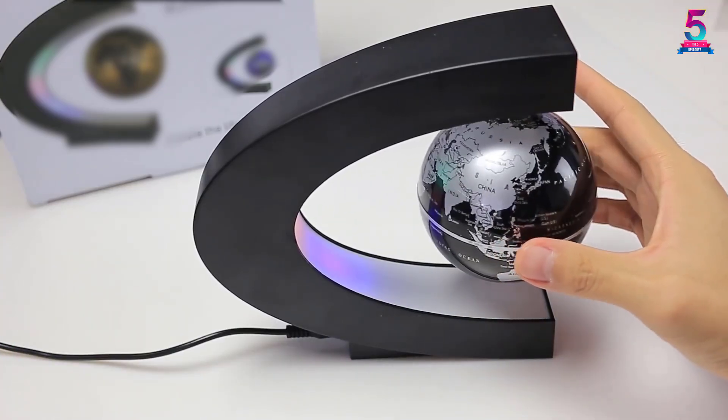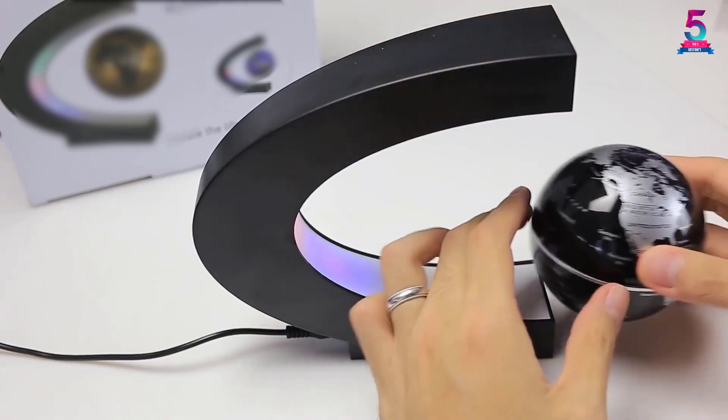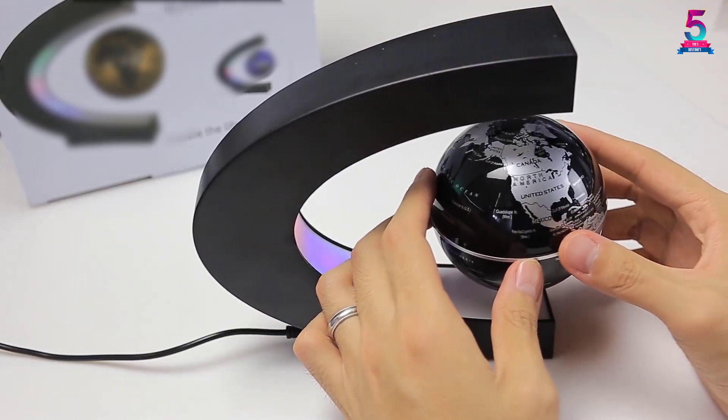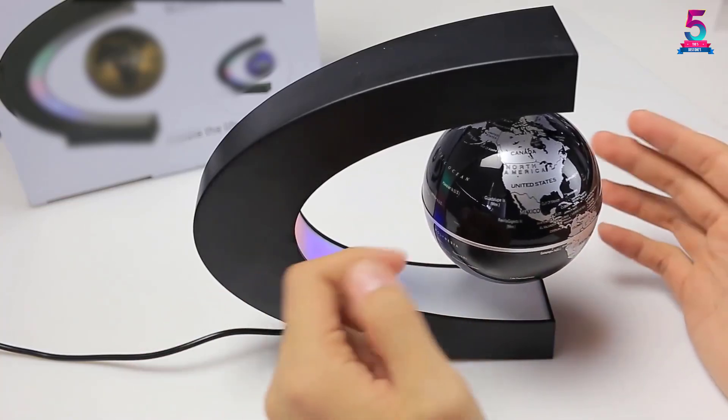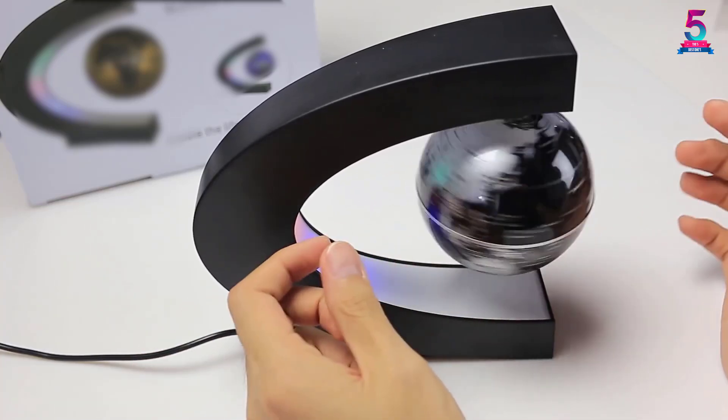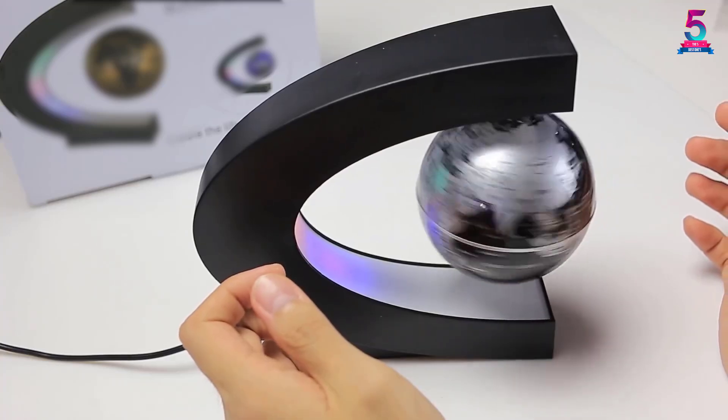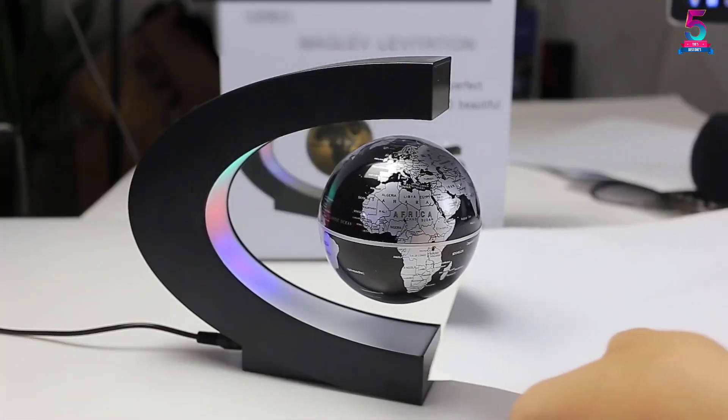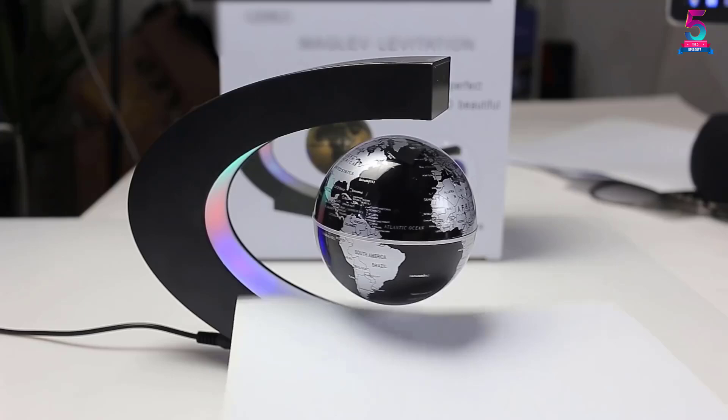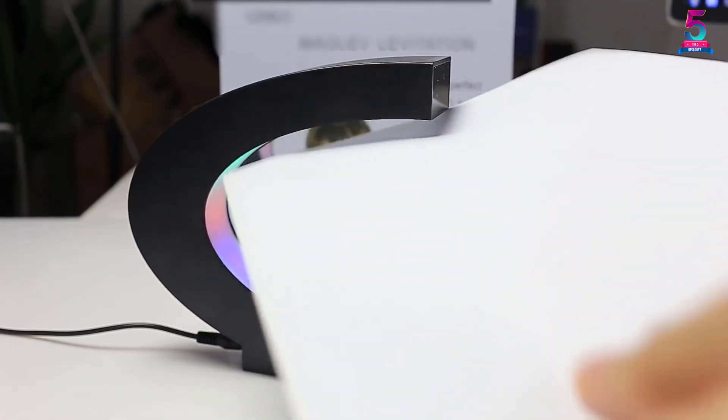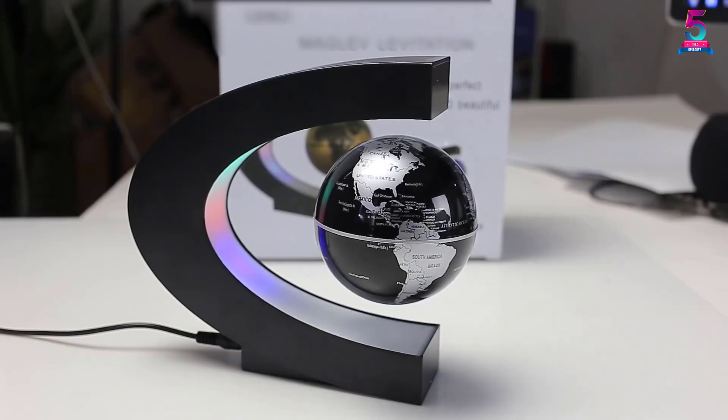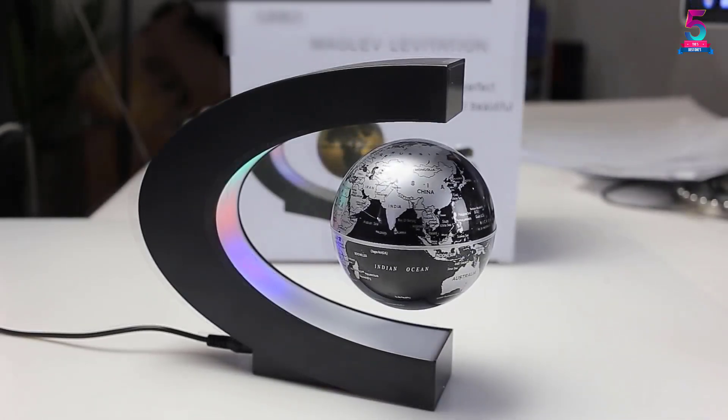It can make any workstation, desk or bedside table look much better with its unique design and properties. Show your guests and colleagues the incredible power of electromagnets that make this floating globe work its wonders. The base has a C shape and has been made from ABS for a rigid and stable position on any flat surface. Since the globe has plastic construction, it is light and also lets you easily set up and rotate more smoothly.